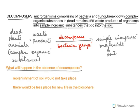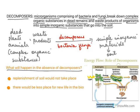What would happen in the absence of decomposers? Two things: first, the replenishment of the soil would not take place; and second, there would be less space for new life in the biosphere. As plants grow, they consume a lot of nutrients from the soil. If dead remains did not decompose, these nutrients would be trapped in their bodies and not released back into the soil, slowly depleting the soil of nutrients.